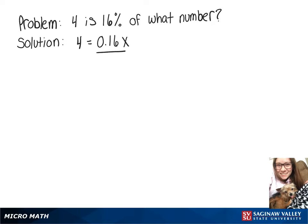We would solve for x by dividing both sides by 0.16, and that'll get x by itself. 4 divided by 0.16 is 25.